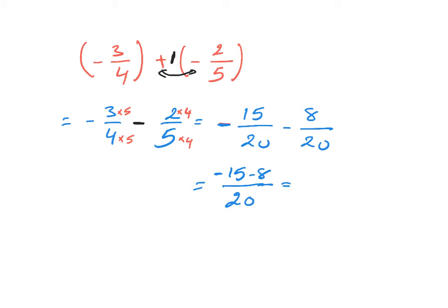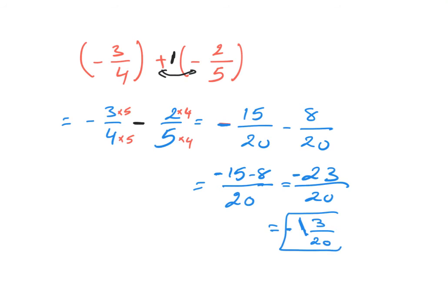When you combine two values with the same sign, you add the values — which is 23 — and keep the sign, giving negative 23 over 20. This is an improper fraction because 23 is greater than 20. We can change it to a mixed number if needed: 20 goes into 23 one time, so it's negative one and three over 20.